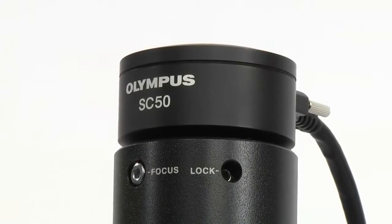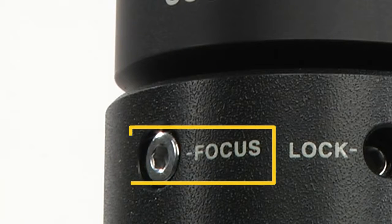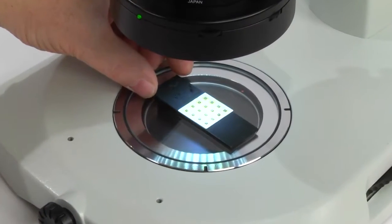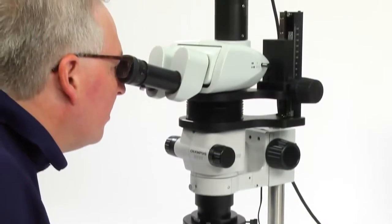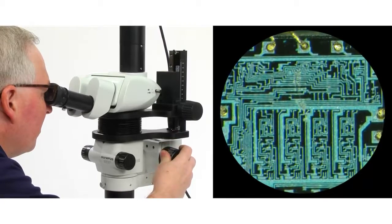For this procedure to work, the microscope should be equipped with a camera mount that has a built-in focus adjustment. First, place a sample on the stage plate. While looking through the eyepieces, bring the image into focus using the microscope focus knob.